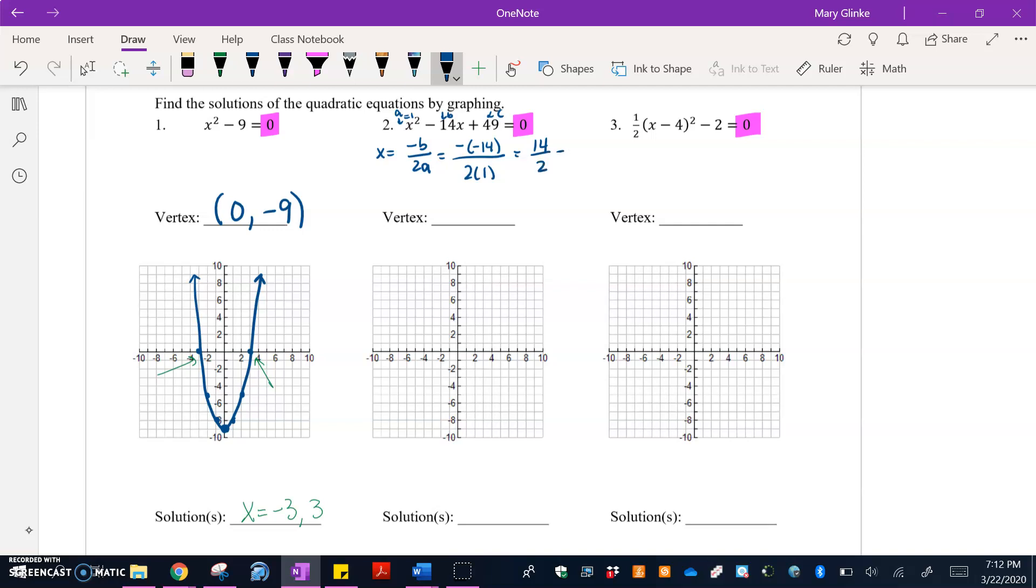So I'm actually doing a positive 14 divided by 2, which means the x value of my vertex is seven. So to find my y value, I'm going to plug seven in for x into my original equation. And so I get 7² - 14 times 7 + 49. That becomes 49 - 98 + 49. And so when I add all of those together, I end up with a y value of zero.